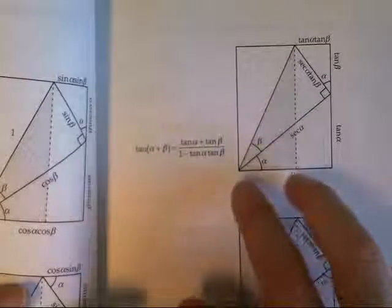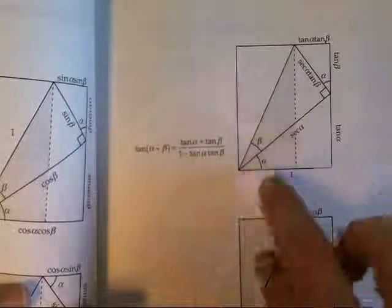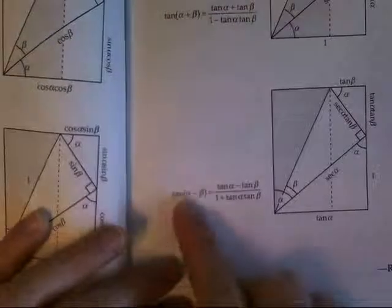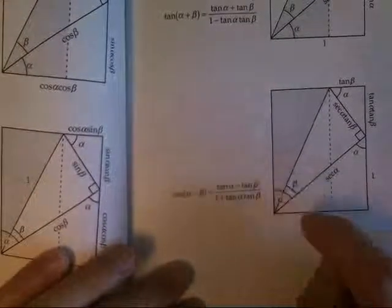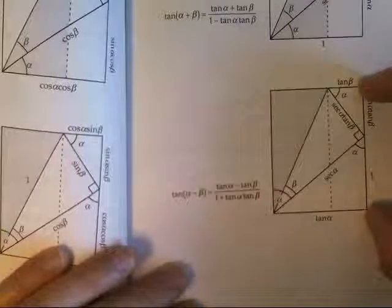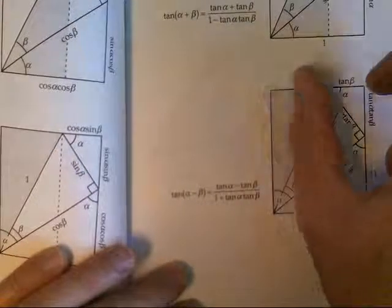So the tangent of this angle now is going to be the opposite side divided by the adjacent. The opposite side is the sum of those two things. The adjacent side is the difference between one and this little bit, which is what they have there. Likewise, doing the same thing for the a minus b, we're using that over here where a is this.